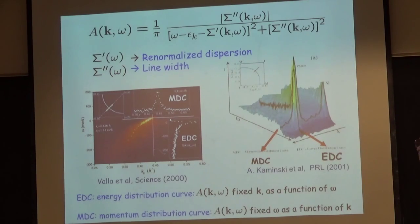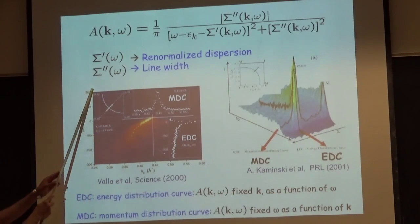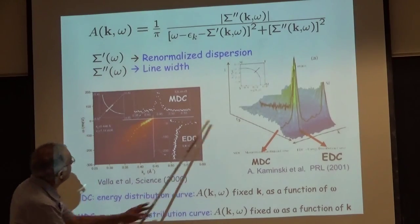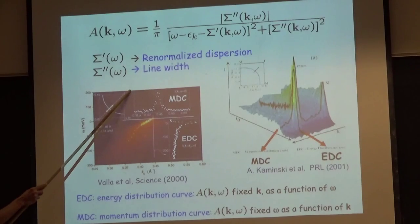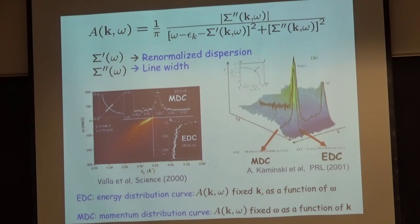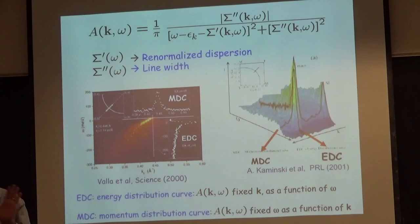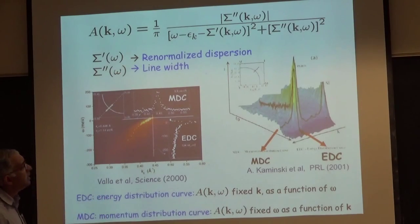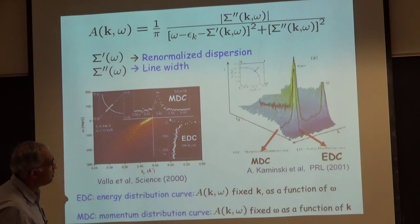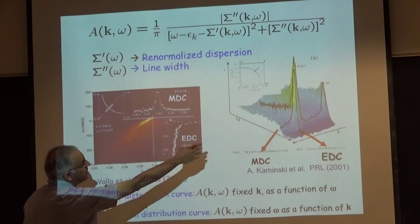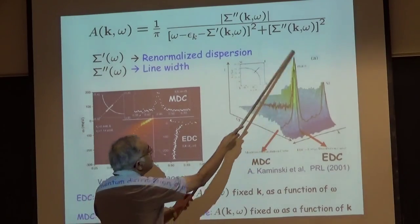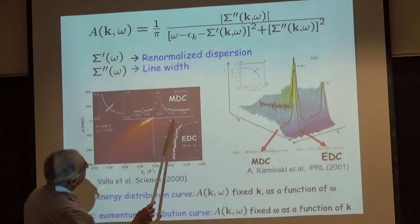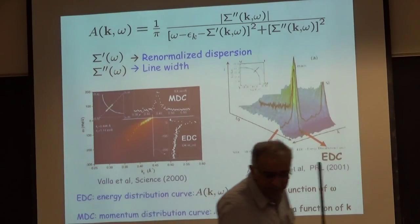Here I show data from the Bi2212 system. Here is photoemission data. Here is energy omega measured with zero at the chemical potential, and this is momentum going along a certain cut in the Brillouin zone, which is shown in the inset. False color plots are the only way to get your papers into the glossy journals. You really have to look at cuts to see what's going on. It's very broad down here, then it sharpens up, then it crosses the chemical potential. You can cut this in various ways and see a fairly asymmetric line shape. You can analyze these line shapes to get sigma prime and sigma double prime.